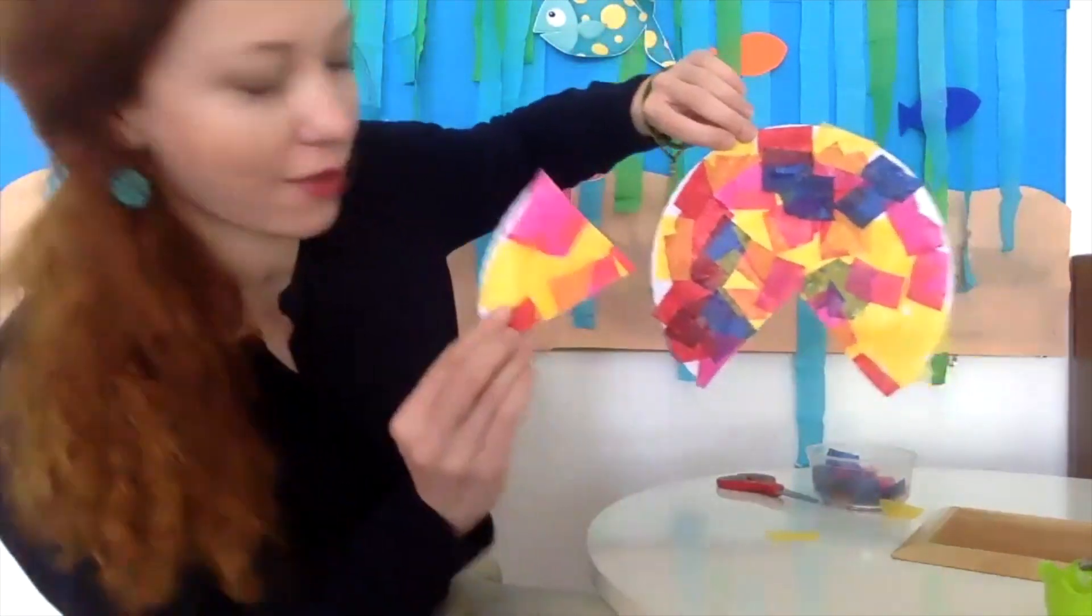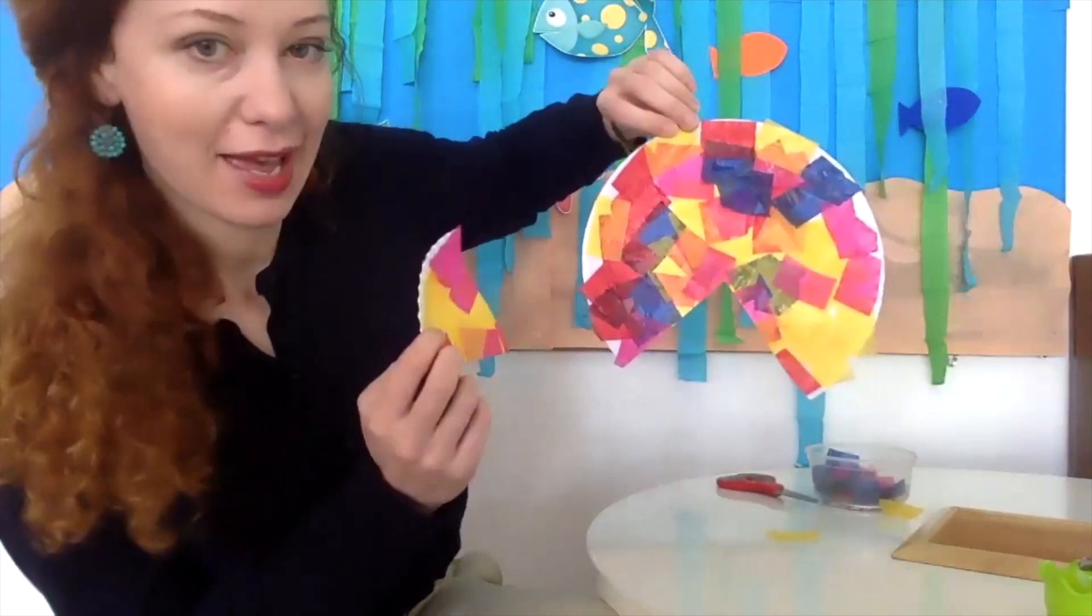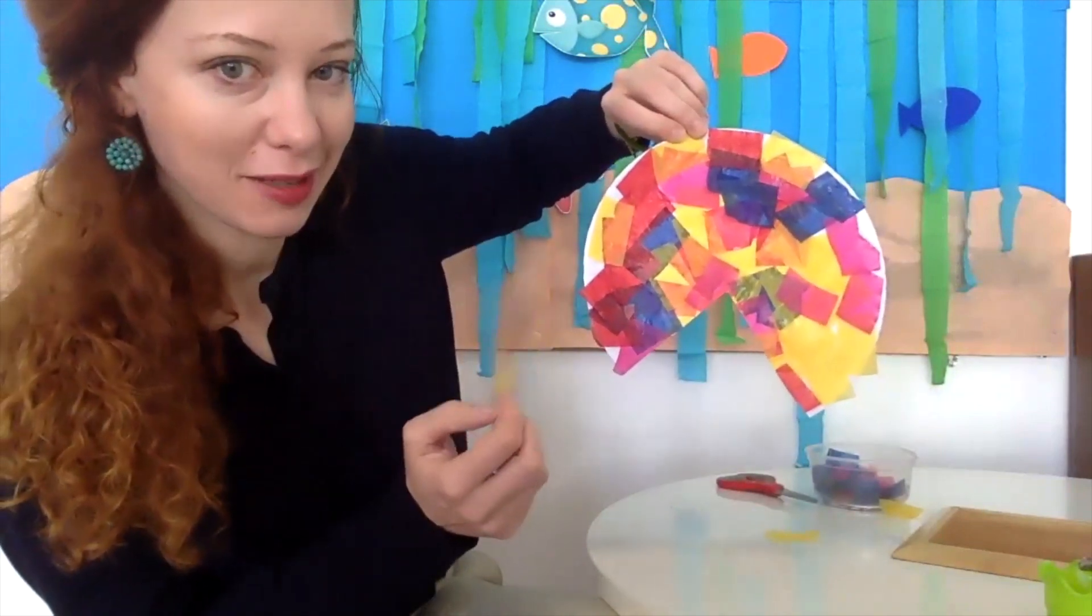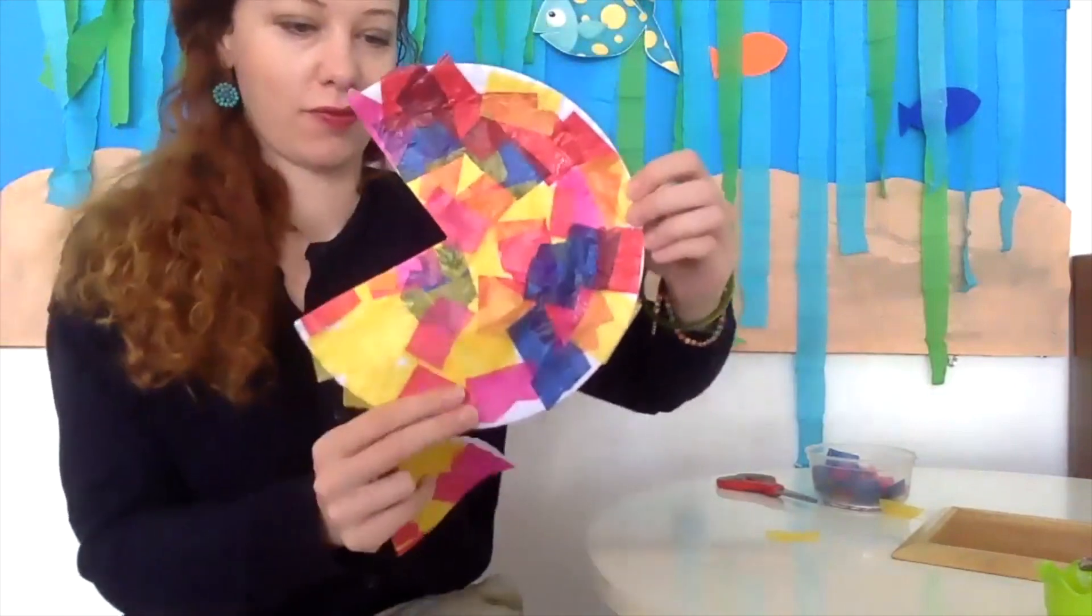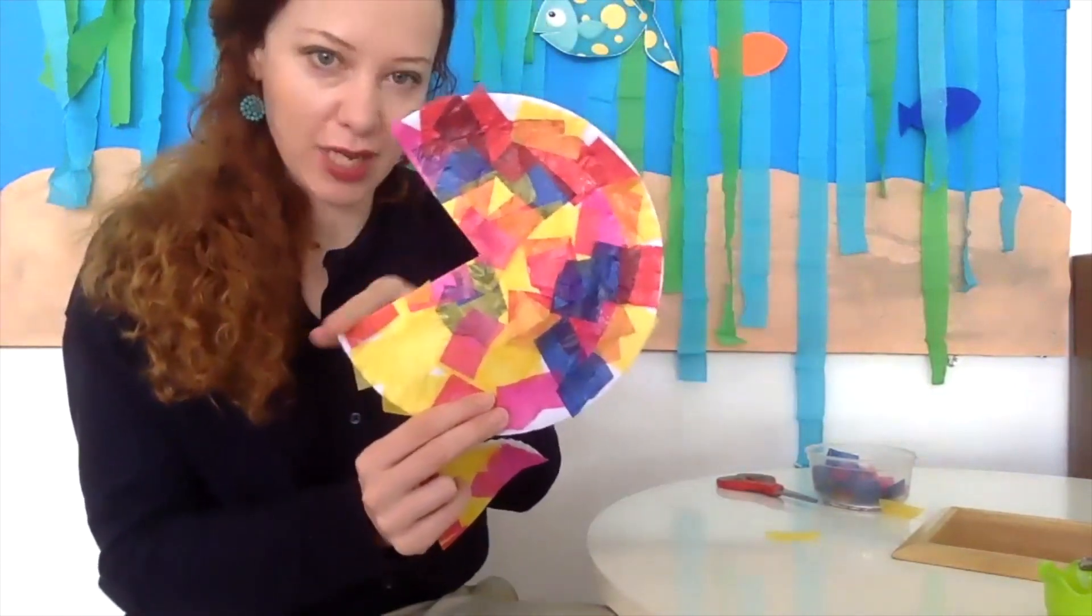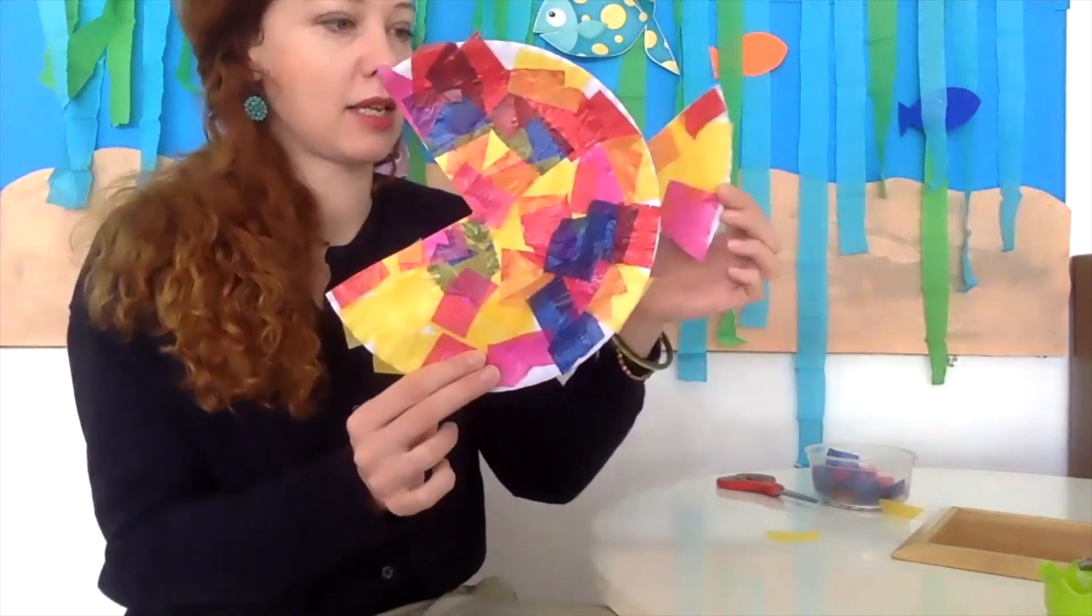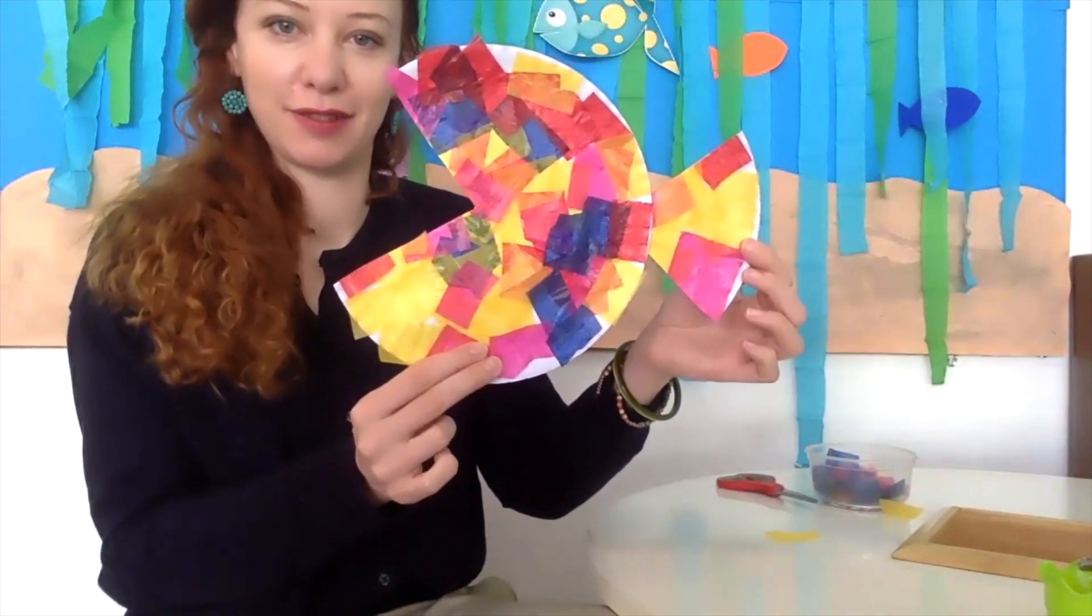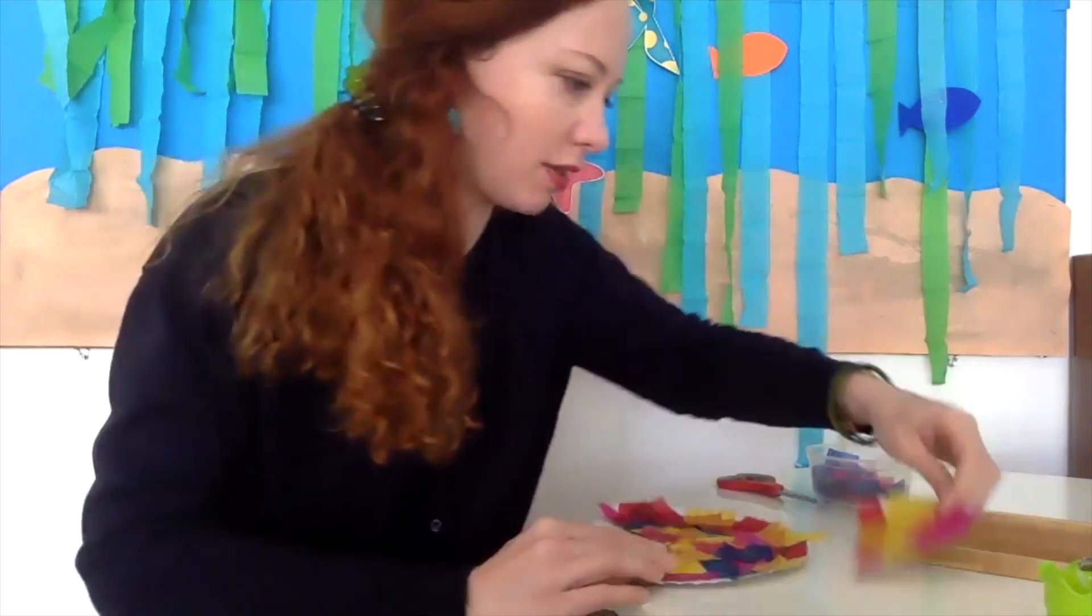Now we have a triangle here too. Can you guess what we're going to do with it? This will be the mouth of the fish and then this will be the tail.